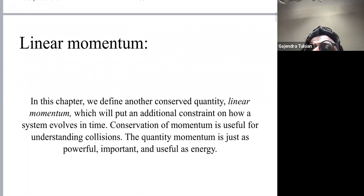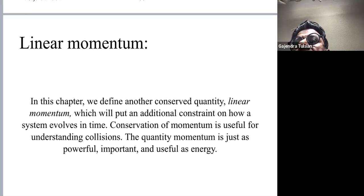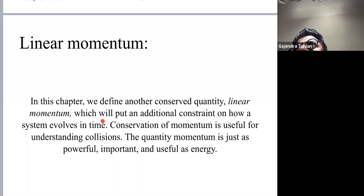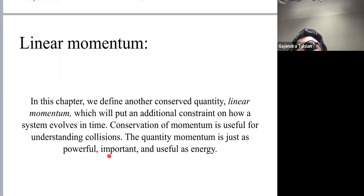Let's get started with linear momentum. We'll define a conserved quantity called linear momentum. When we say conserved quantity, we mean that as the system is evolving — as things change, like two objects colliding and changing velocities — the linear momentum of the system remains constant. In physics, we look at systems where things change and ask: are there any quantities that stay the same? Linear momentum is one of them. It's a very important quantity — just as powerful, important, and useful as energy.